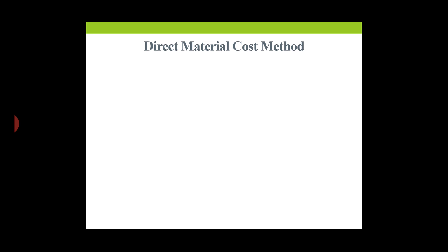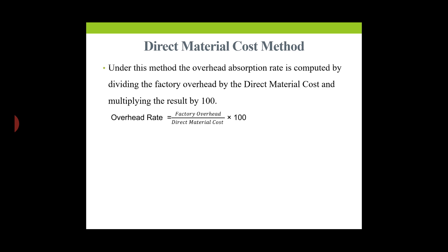Under the Direct Material Cost Method, the overhead absorption rate is computed by dividing the factory overhead by direct material cost and multiplying by 100. So, overhead rate = (Factory Overhead / Direct Material Cost) × 100.